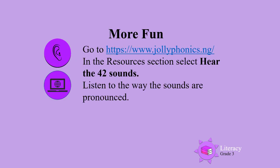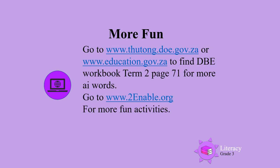For more fun, go to the Jolly Phonics website and in the resources section, select 'Hear the 42 Sounds' to listen to the way the sounds are pronounced. You can also go to the DBE website, find the DBE workbook term 2, page 71, and find more A-I words. Go to www.toenable.org for more fun activities.